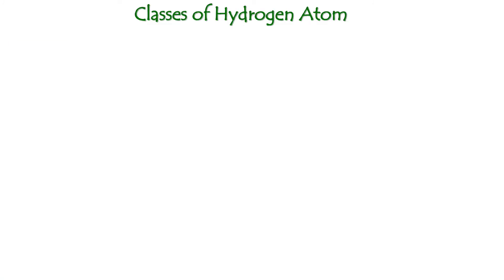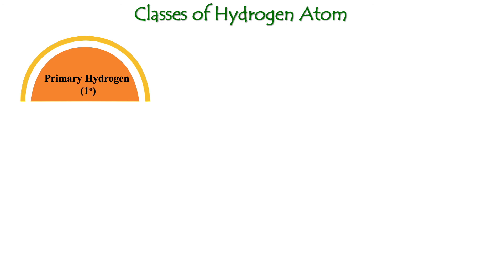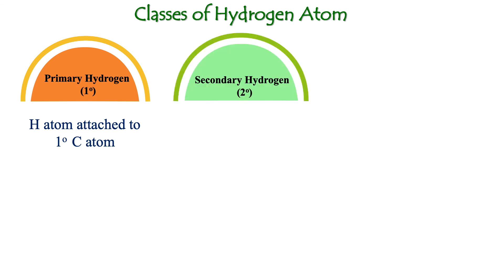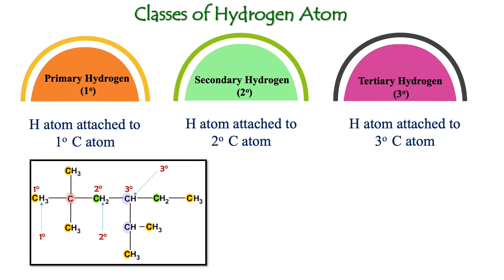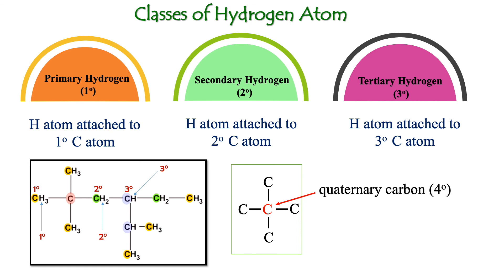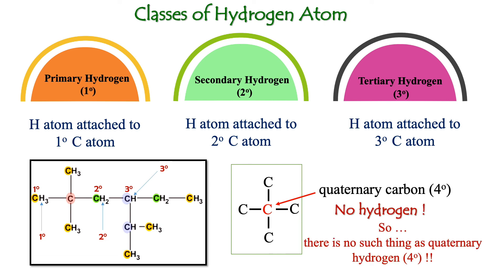Next, let's look at the classes of hydrogen atoms. Primary hydrogen is a hydrogen atom attached to a primary carbon. Secondary hydrogen is a hydrogen atom attached to a secondary carbon. Tertiary hydrogen is a hydrogen atom attached to a tertiary carbon. In general, the class of hydrogen follows the class of carbon. If a carbon is attached to four other carbons — a quaternary carbon — it has no hydrogen, so there is no such thing as quaternary hydrogen.